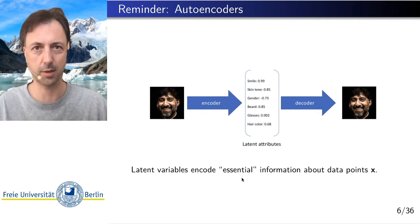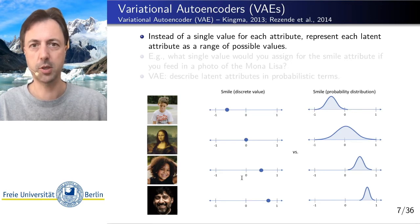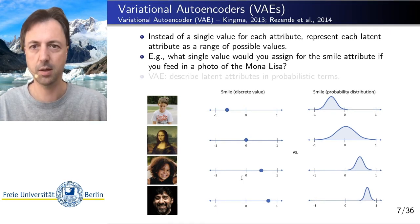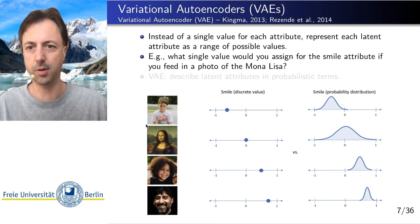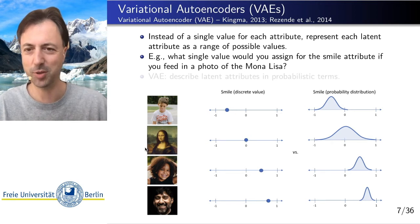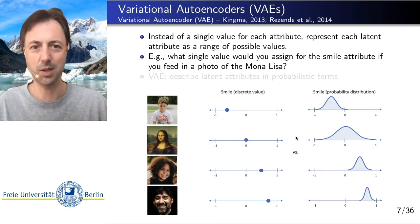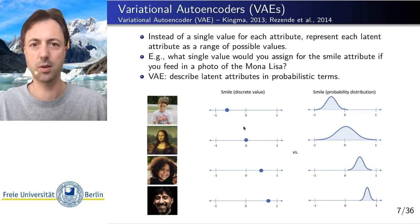That's a deterministic autoencoder. A variational autoencoder changes this as follows. Instead of a single value for each latent space dimension, we have a probability distribution for them. For example, consider a latent space attribute corresponding to smile. An unhappy child would be somewhere in the negative range, a very happy child in the positive range. But then there's Mona Lisa — you're not really sure if she's smiling or not — so she would have maybe a zero mean but a large variance, a large uncertainty. In a variational autoencoder, we have a probabilistic description of latent space variables.